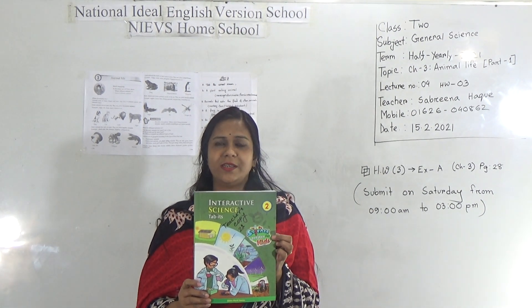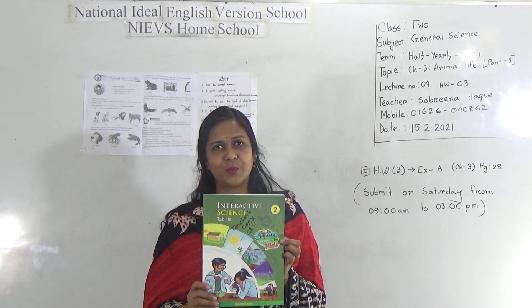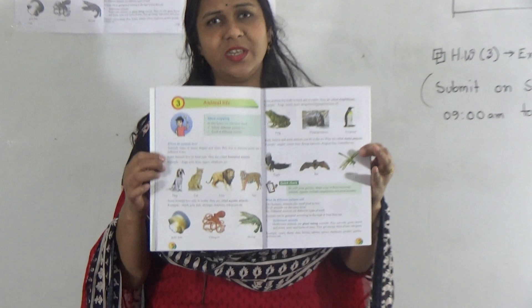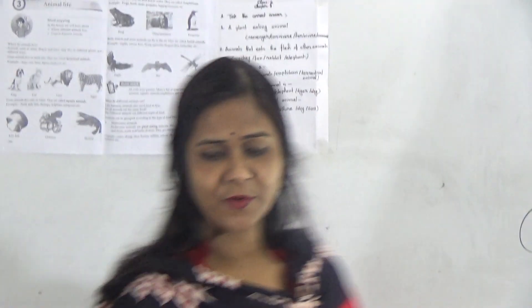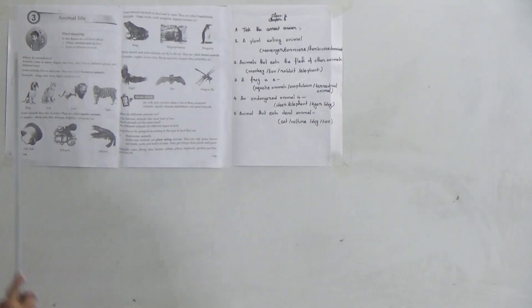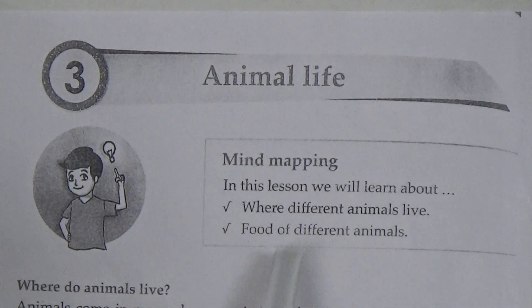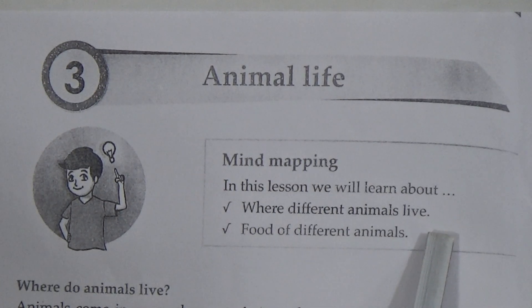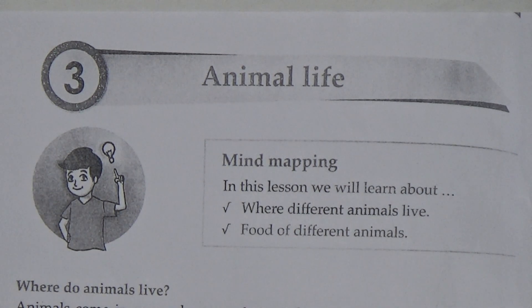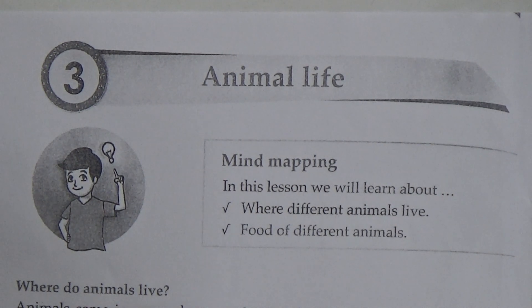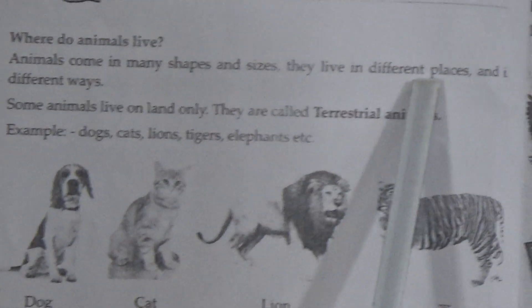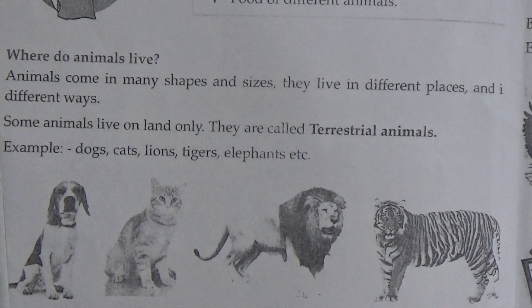Dear students, open your textbook — that means the interactive science book, which is the general science book — and open Chapter 3. Follow the class with your book. So let us start our today's topic. The name of the chapter is Animal Life. In this chapter we will learn about where different animals live and the food of different animals.